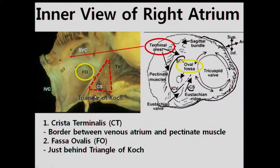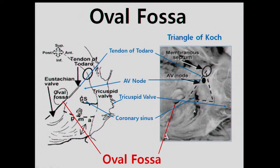This slide shows a more detailed view of the right atrium. A linear band-like structure is located between the pectinate muscle and venous atrium. We call this linear structure the terminal crest or crista terminalis. The fossa ovalis is usually located just behind the Koch's triangle. This is a more magnified view of the septal area. The triangle of Koch consists of three major components: the compact AV node at the summit, the tendon of Todaro at the posterior border, and the tricuspid annulus at the anterior border. The fossa ovalis is located just behind the tendon of Todaro.